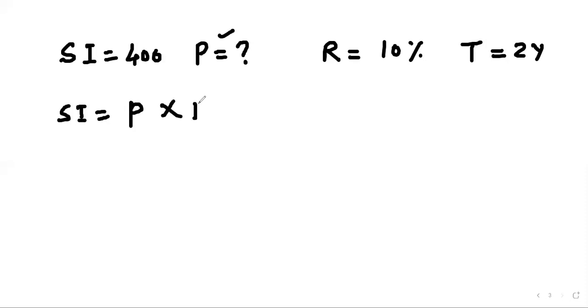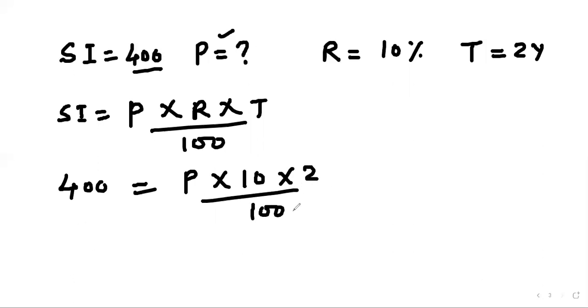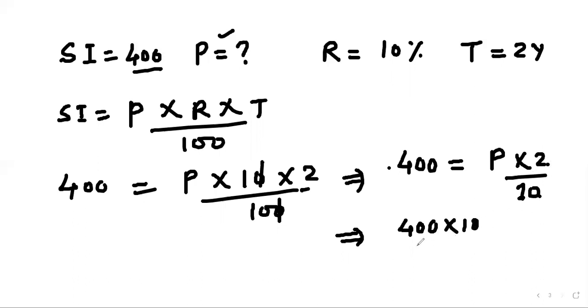SI = P × R × T / 100. Here we put the values: SI is 400, P we don't have, rate is 10, time is 2, divided by 100. Now we cancel zeros, so we get 400 = P × 2 / 10. Now we have to find P. The 10 in denominator goes to the other side as numerator, and 2 becomes denominator. So P = 400 × 10 / 2 = 2000.